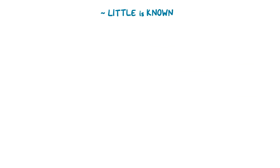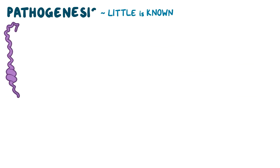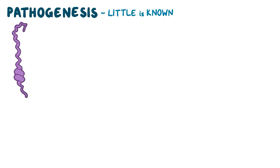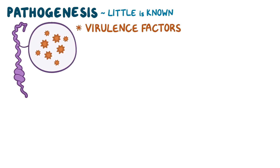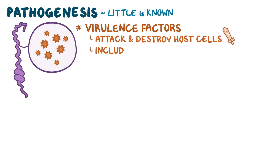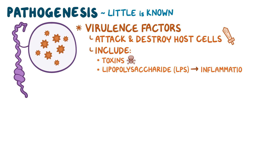Currently, little is known about the pathogenesis of this bacterium, but we do know that it possesses a number of virulence factors, which are like assault weaponry that help it attack and destroy the host cells. These include toxins and some immunogenic molecules, like lipopolysaccharide, or LPS, that triggers an immune response, causing inflammation.